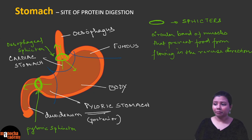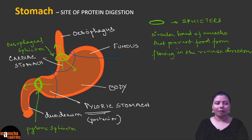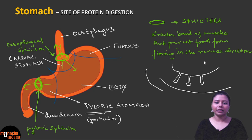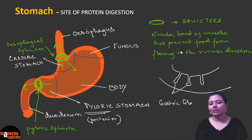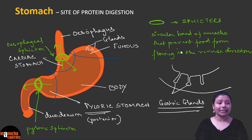Sphincters and valves have the same function — allowing flow in only one direction — but different structures: sphincters are circular bands of muscle, valves are flaps. The stomach is the main region for protein digestion. The inner wall of the stomach is thrown into small pits known as gastric glands, which release the gastric juice containing enzymes needed for digestion. We will discuss the juices in detail in the next class.